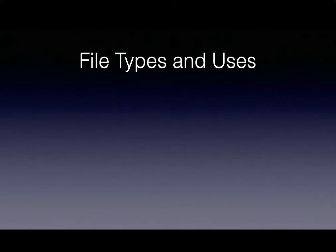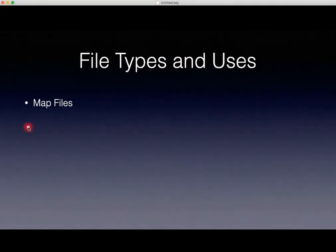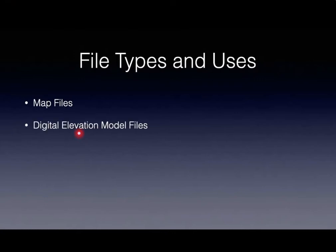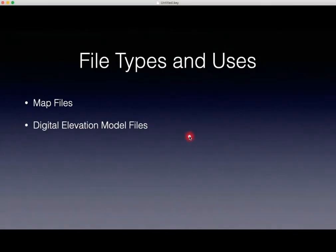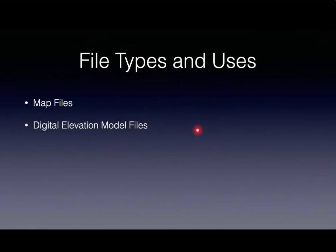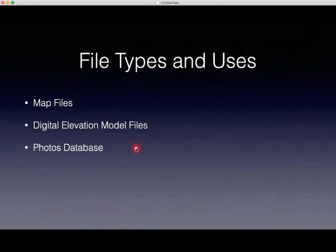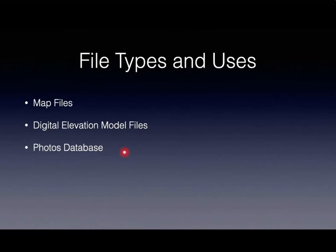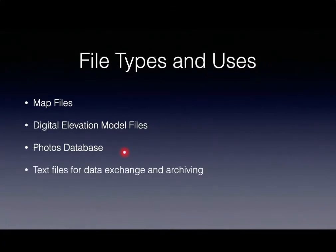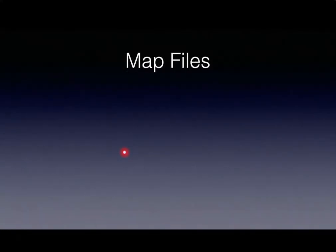Different file types in GMDE. We have map files, which are used for the base map. Second, we have digital elevation model or DEM files. Third, you may have a photos database associated with your project, especially if you've taken photos in GMDE mobile and want to visualize them on the desktop, or if you want to add photos directly from the desktop. Fourth, we have text files for data exchange and archiving. And finally, we have the GMDE binary file.